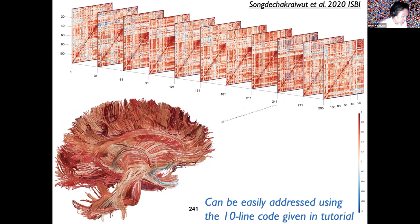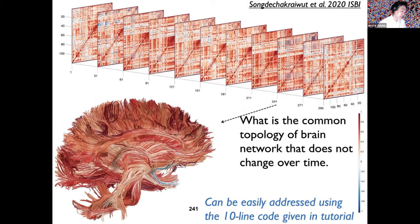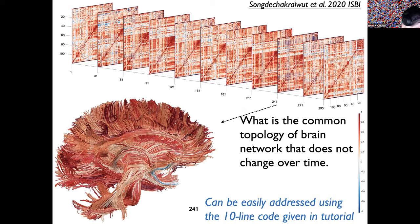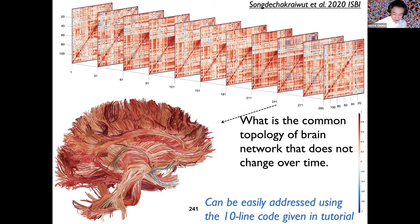The question I want to address is very simple — I like problems that can be stated in one sentence. So: what is the common topology of a brain network that does not change over time? This is not an easy problem. You can address this problem with the code I provided on the web page. I'm not going to give you the direct answer, but an indirect answer — then a student should be able to do it.